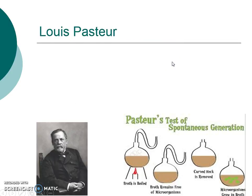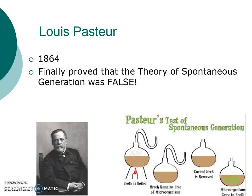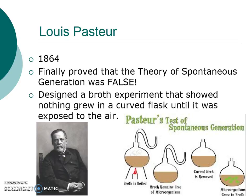Finally, we have Louis Pasteur. In the year 1864, he finally proved the theory of spontaneous generation was false. What he did was design a broth experiment that showed nothing grew in a curved flask until you actually broke that curved flask. Then things grew inside once it was exposed to the air, finally proving that the theory of spontaneous generation was wrong.